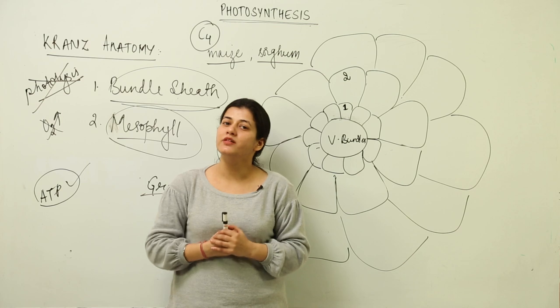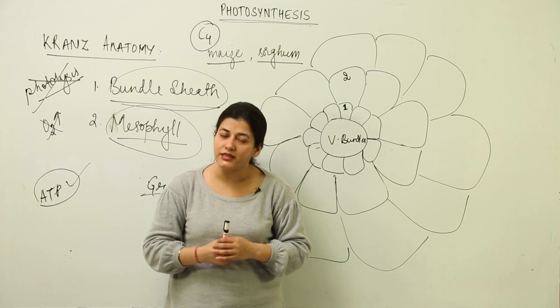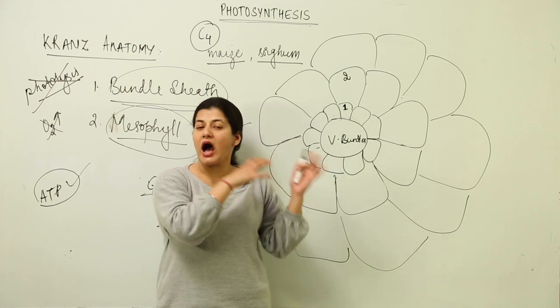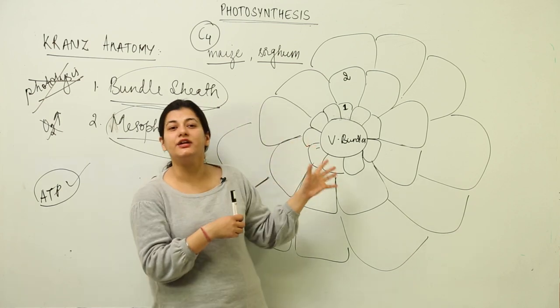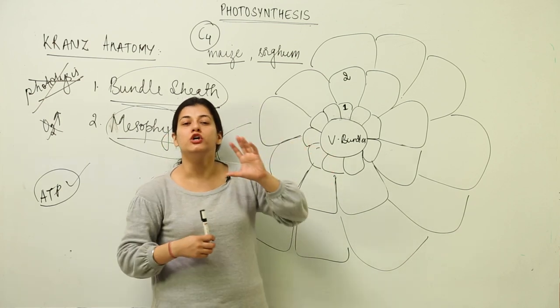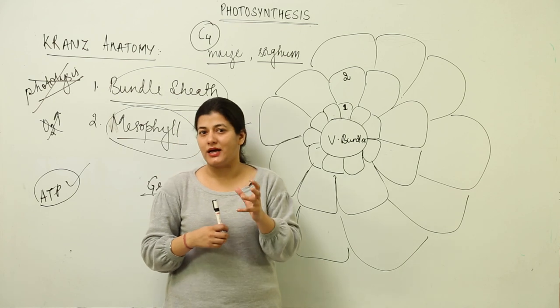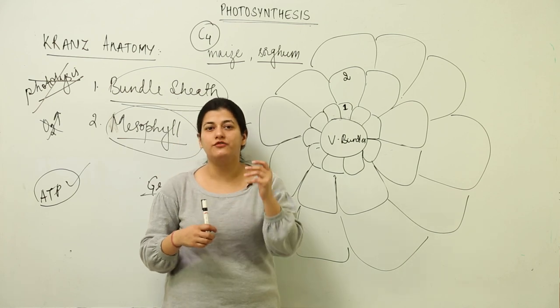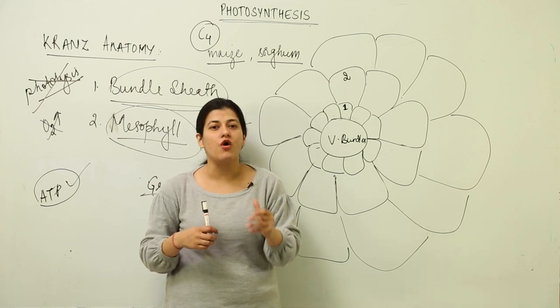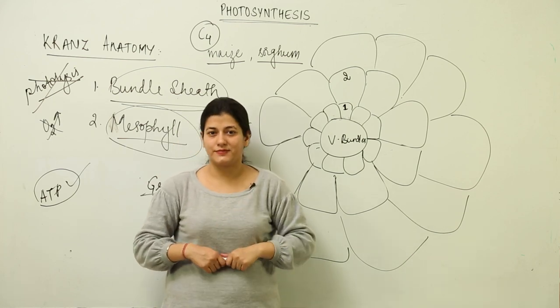Now that you are aware of Kranz anatomy, we can move on to the C4 cycle — how these plants, which have adapted this kind of anatomy, utilize carbon dioxide for the formation of glucose.